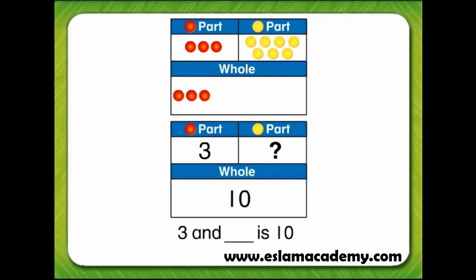The other part of ten is seven. Three and seven is ten.